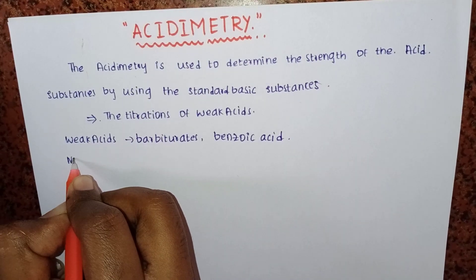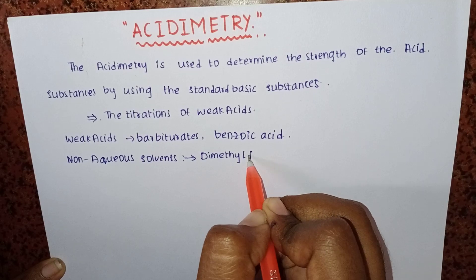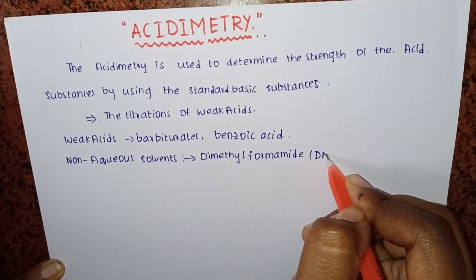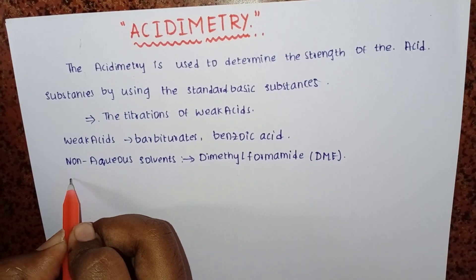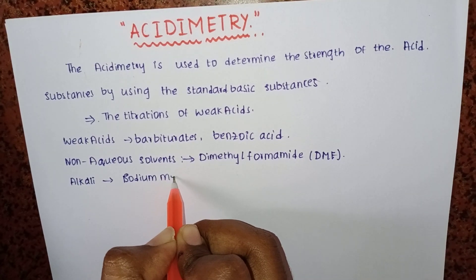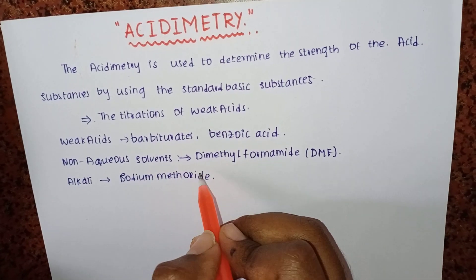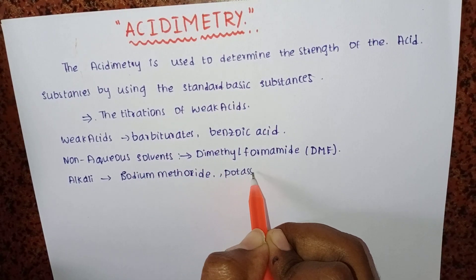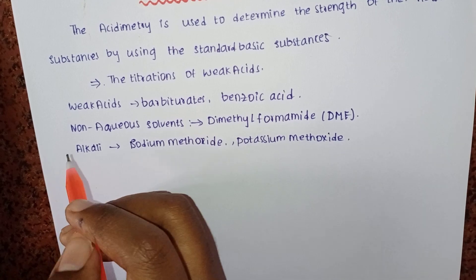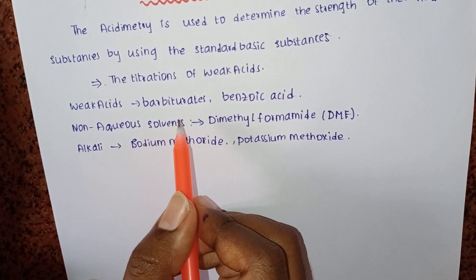Weak acids are titrated with non-aqueous solvents such as dimethylformamide (DMF), and by using an alkali such as sodium methoxide or potassium methoxide. We are going to titrate weak acids with alkali substances using non-aqueous solvents.